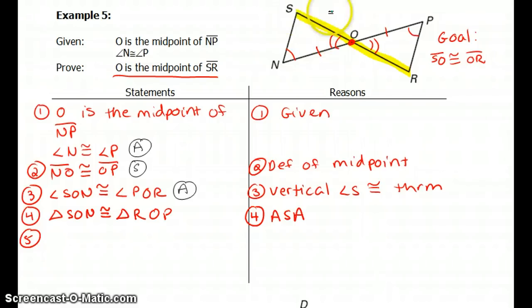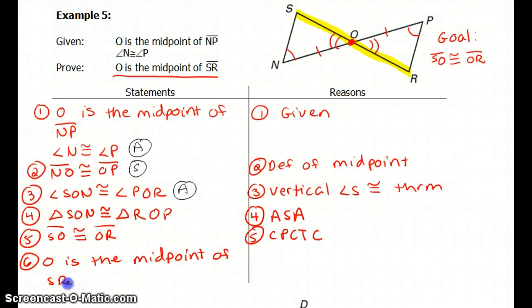Now I know this whole triangle is congruent to that whole triangle. Now I can prove that any of the corresponding parts of these triangles are congruent. So I can prove what my goal is going to be, which is SO is congruent to OR. So think about what reason would allow me to say that because the two whole triangles are congruent, then their pieces are congruent. You're right, that would be CPCTC. Now that I know that SO is congruent to OR, I know that O must be the midpoint of SR.